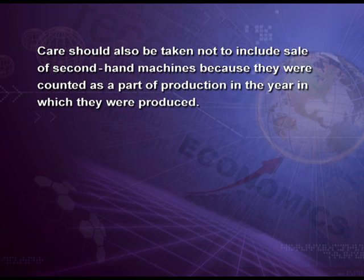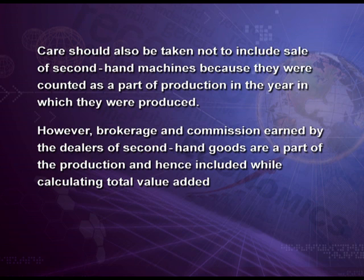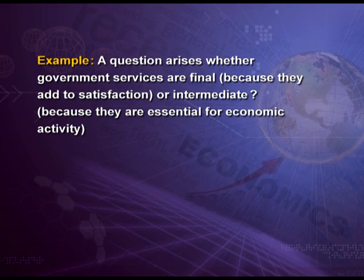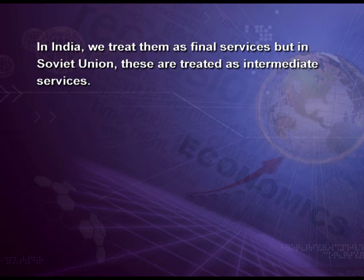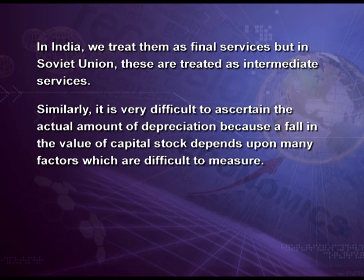Care should also be taken not to include the sale of second-hand machines because they were counted as part of production in the year in which they were produced. However, brokerage and commission earned by dealers of second-hand goods are a part of production and hence included while calculating total value added. There is a difference of opinion among national income accountants regarding raw materials, intermediate goods and depreciation. For example, a question arises whether government services are final or intermediate — in India we treat them as final services, but in the Soviet Union they are treated as intermediate services. Similarly, it is very difficult to obtain the actual amount of depreciation because a fall in the value of capital stock depends upon many factors which are difficult to measure.